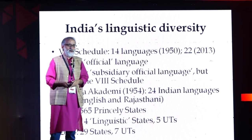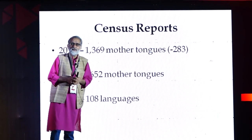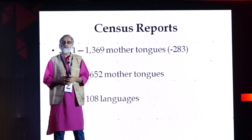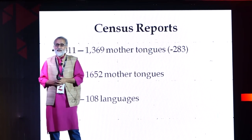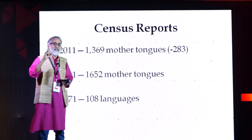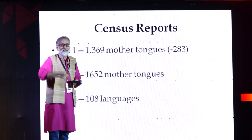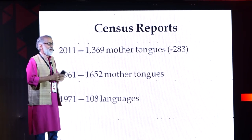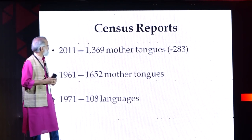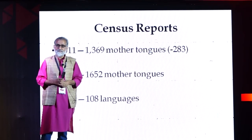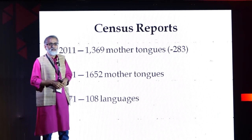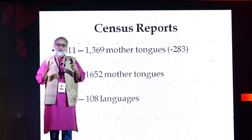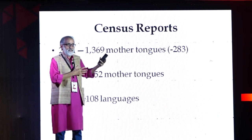Let us look at the official census reports. The latest census report available to us is the 2011 census report. Interestingly, the 2001 census results were released 7 years after the survey — very recently, last month in 2018. According to this census report, India is supposed to have 1,369 mother tongues. Somebody said 22 languages — now look at this figure. The census report says India has 1,369 mother tongues, and this number has to be seen in the context of an earlier census report.